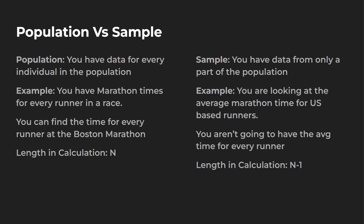Population versus sample: population means you have data for every individual in the total population. For example, marathon times for every runner in a race — you can find the time for everyone that finished the Boston Marathon. The length in the calculation is n. Sample is when you only have data from part of a population. For example, trying to find the average marathon time for U.S. runners — not every race is online, and some people run marathons on their own. So you won't have every data point, and the length in the calculation is n minus one.